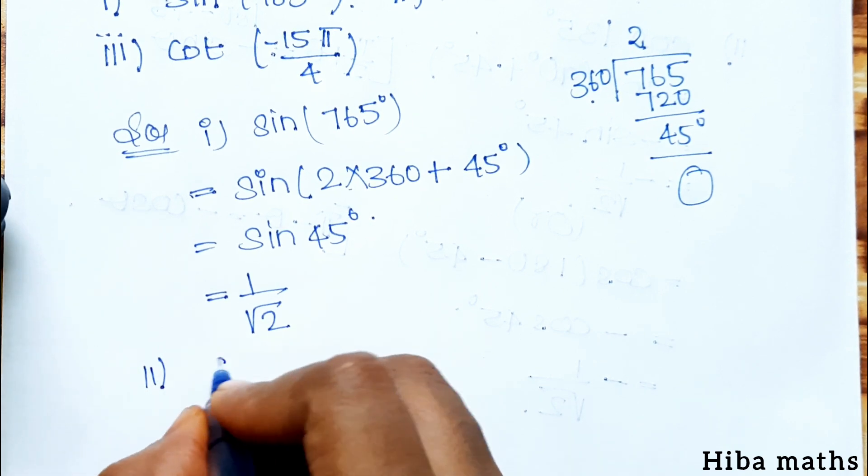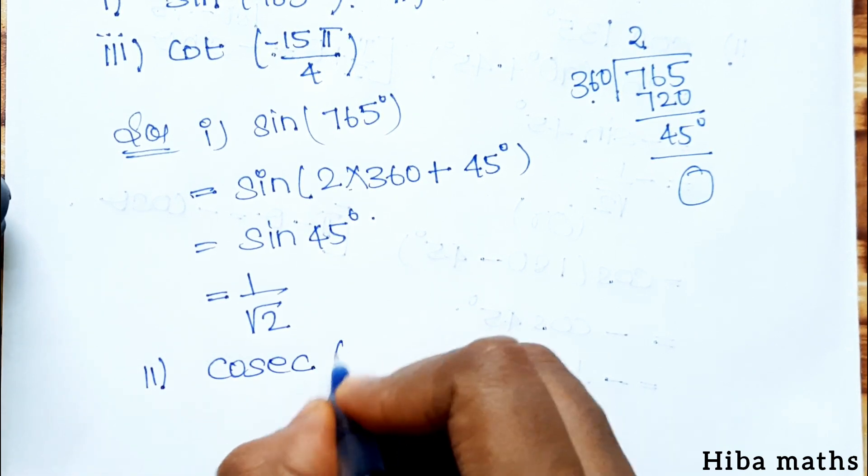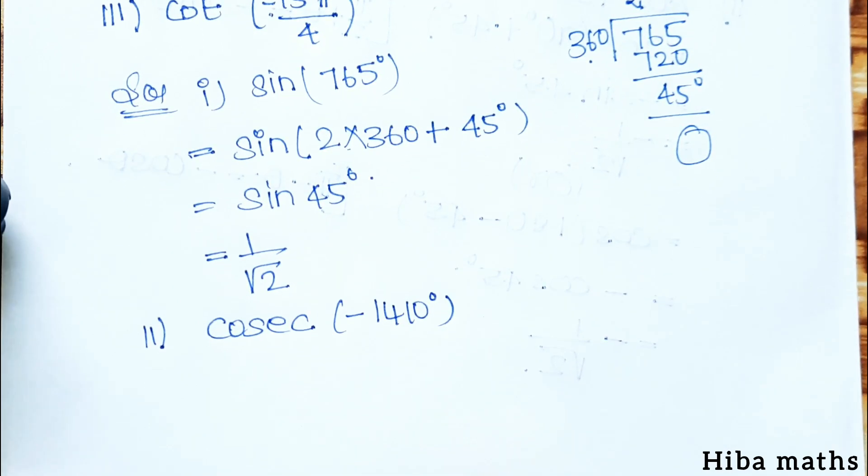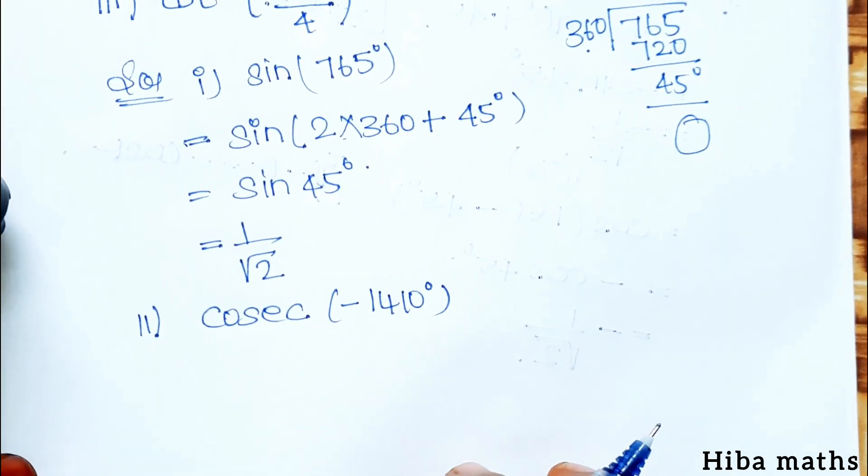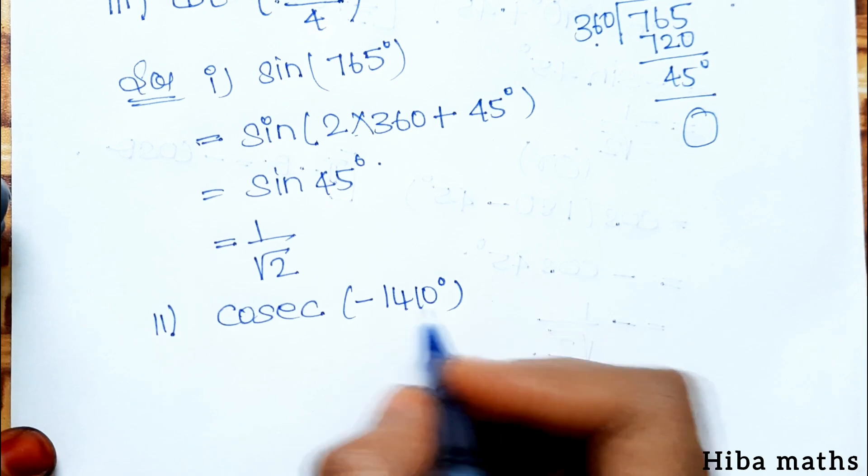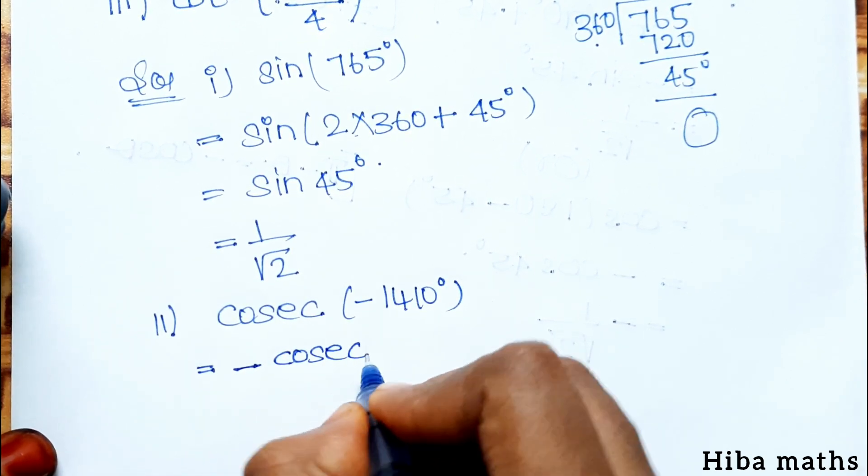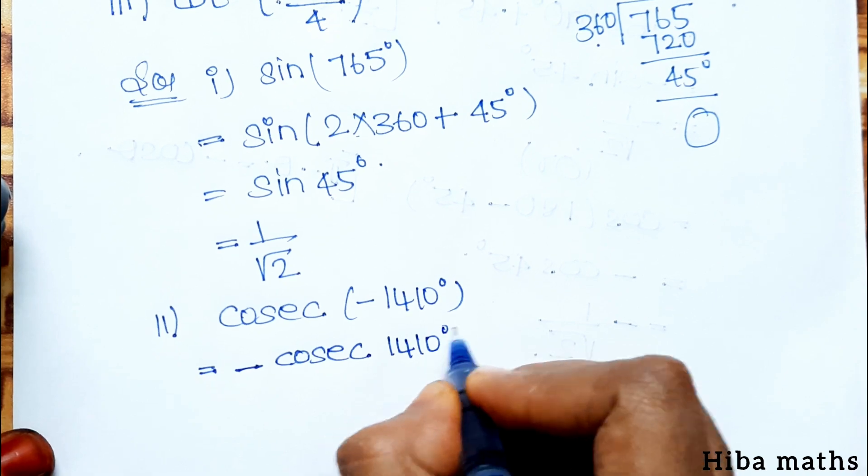Second subdivision, cosec minus 1410 degree. Now, cosec of minus is equal to minus cosec. So first we take the minus outside: minus cosec 1410 degree.